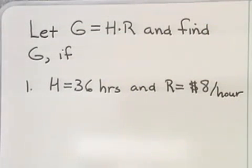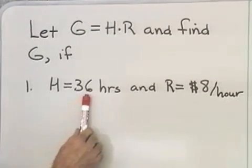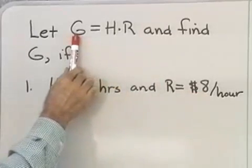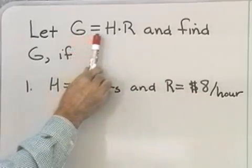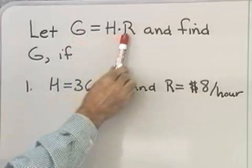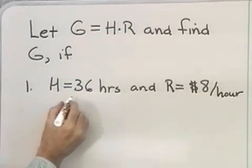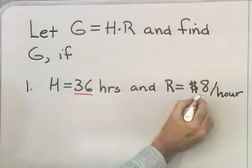Suppose that G is equal to H times R, and we want to find G if H is equal to 36 hours and R is equal to $8 per hour. So this formula right here is the formula for gross pay if you work H hours per week at a rate of R dollars per hour. So I know that H is 36, R is equal to 8, and G is equal to H times R.